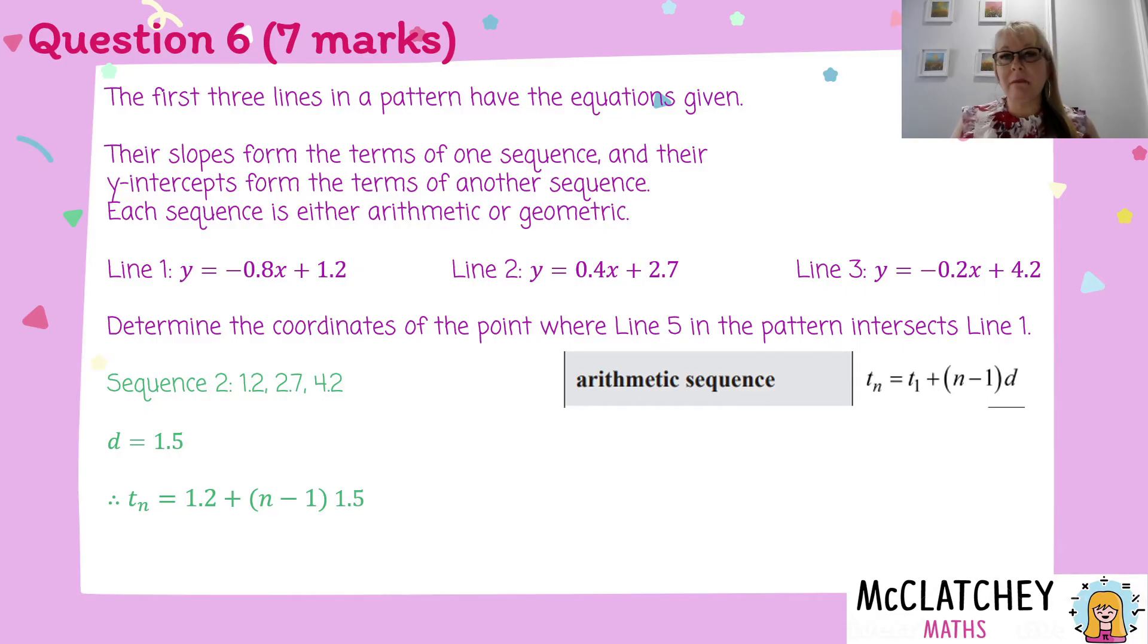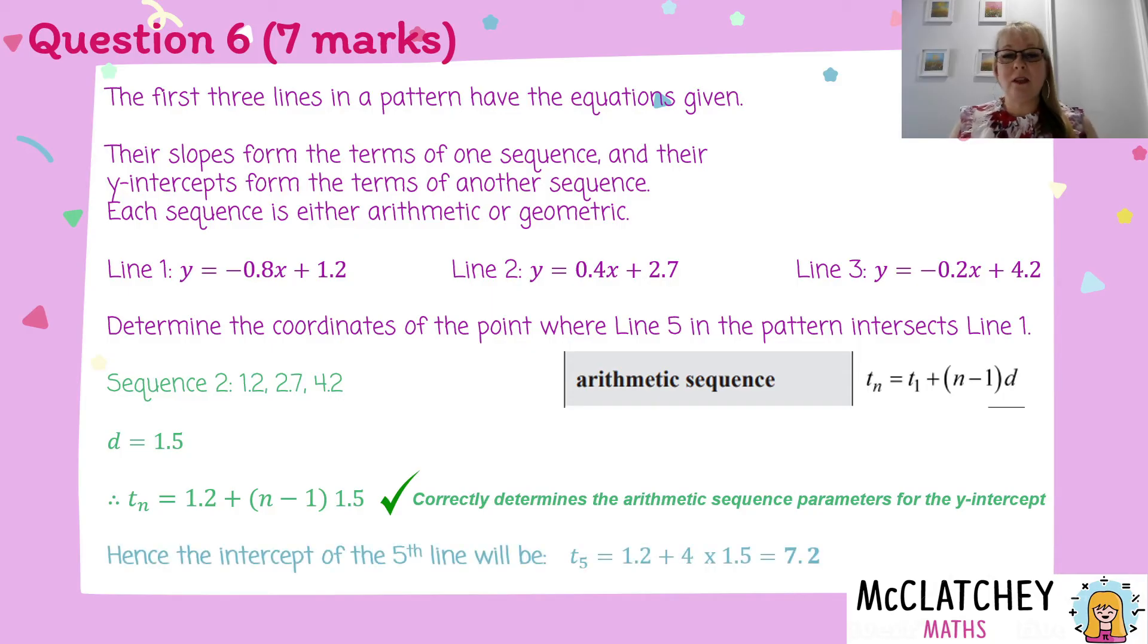So now I can use that information. I've got the common difference. I know the first term is 1.2. I could put that into my arithmetic sequence formula. Now I could also substitute in n equals 5 because it's the fifth one in the sequence. That's my next mark there too, by the way. Now I can work out the intercept for this line. It's going to be 7.2. So now I've got a gradient. I've got an intercept. I can work out the equation for line 5. And that, working out that part there, that intercept was also my next mark.